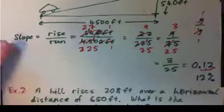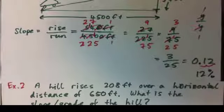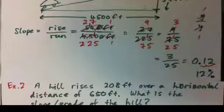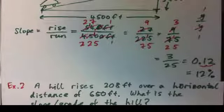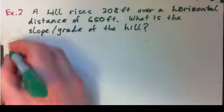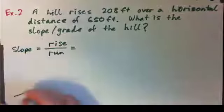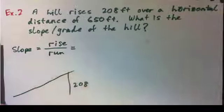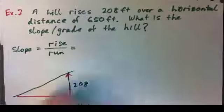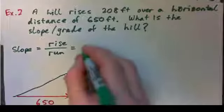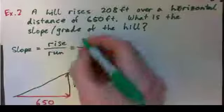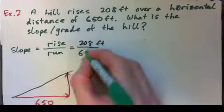For example 2: a hill rises 208 feet over a horizontal distance of 650 feet — what is the slope or grade of the hill? See if you can give your answer as a fraction in lowest terms, a decimal, and a percentage. The slope or grade is equal to rise over run. The rise is the amount it goes up — 208 feet — and the run is the amount it goes across — 650 feet.